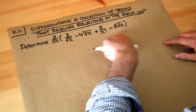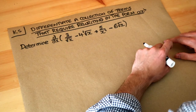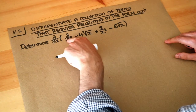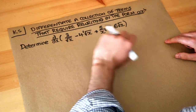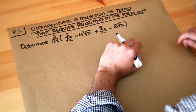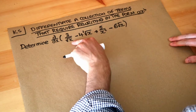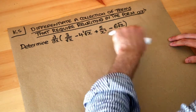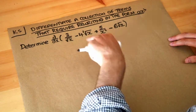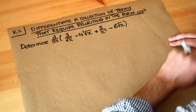Now we're trying to differentiate a more complicated expression where we've got fractions, roots, and things like that. All you need to do is to first rewrite each of these terms in the form something X to the something.